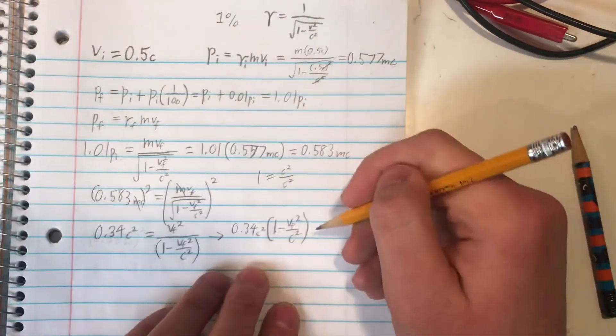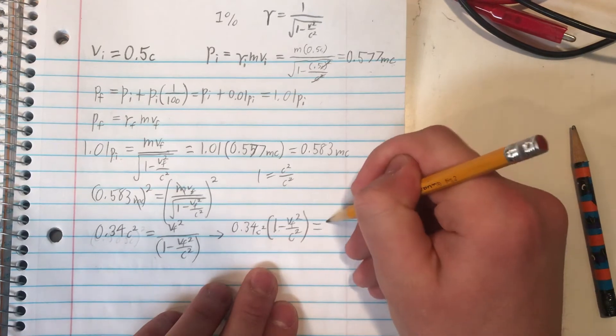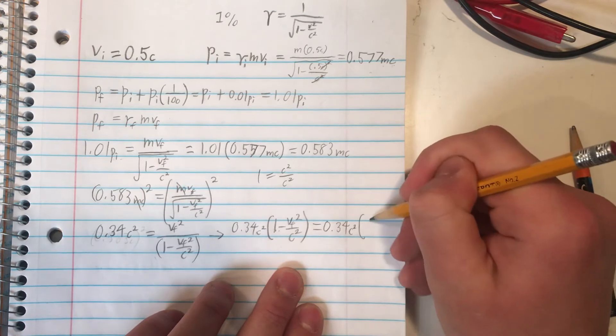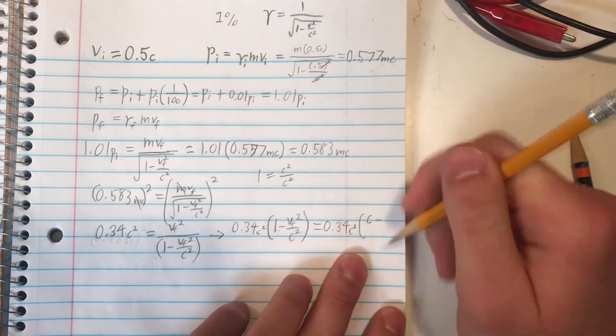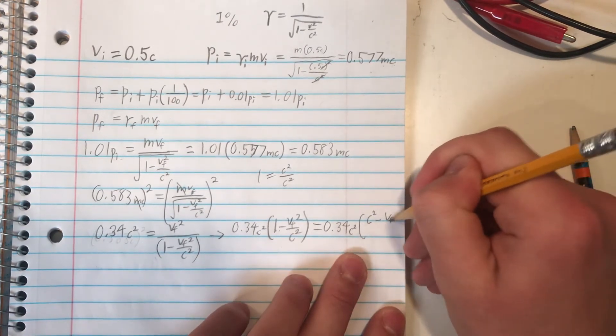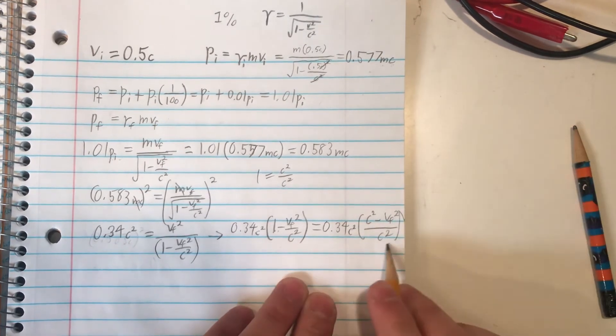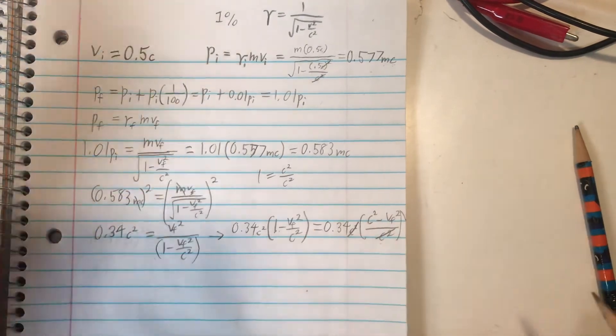So what I mean is, in practice, it'll look like 0.34 c squared times c squared minus vf squared divided by c squared. So they have the same denominator here now. And we can see that these two c squareds will cancel out.